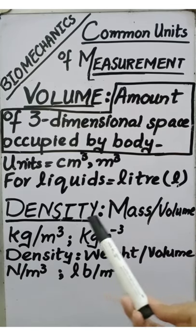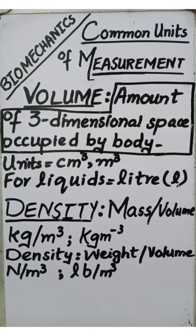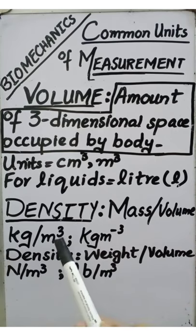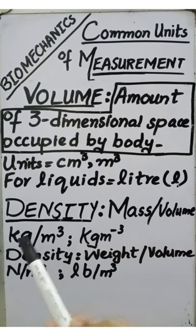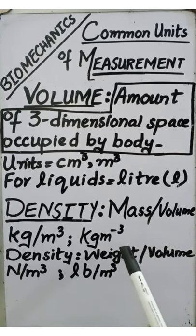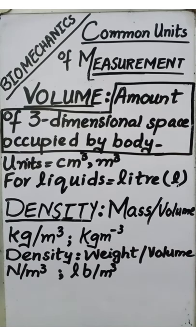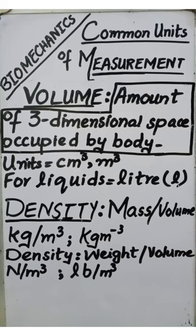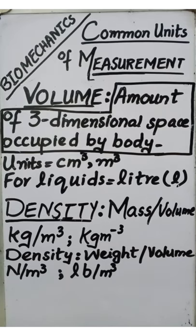The next measurement is density. Density is the ratio of mass to volume. Since mass is in kilograms and volume is in meter cubed, the unit of density is kilogram per meter cubed. It can also be expressed in terms of weight per volume — as the unit of weight is Newton and volume is meter cubed, it is expressed as Newton per meter cubed. The common English unit is pounds per meter cubed.